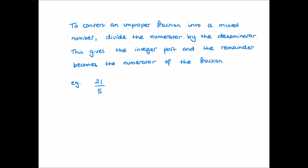Let's generalise this. We say that to convert an improper fraction into a mixed number, we divide the numerator by the denominator. The whole number answer gives us the integer part, and then the remainder becomes the numerator of the fractional part of our mixed number.